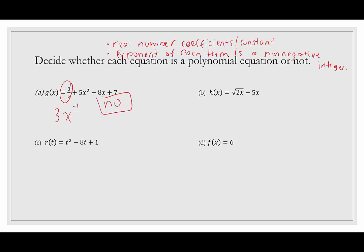Example b: h(x) = √(2x) − 5x. Real number coefficients — check. But there's an issue with the radical: √(2x) written as an exponent becomes 2x to the one-half, and one-half is not an integer. So this is not a polynomial equation either.